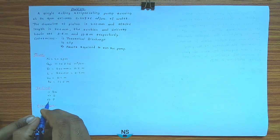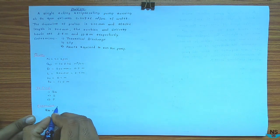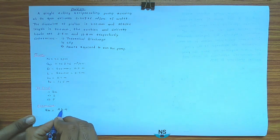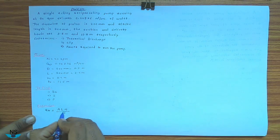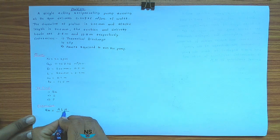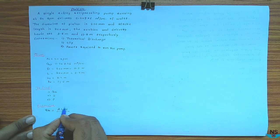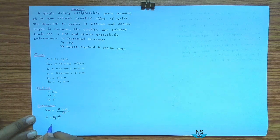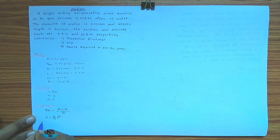For a reciprocating pump, theoretical discharge Q_theoretical is equal to area (A) into stroke length (L) into speed n in rpm, divided by 60. The division by 60 is to convert rpm into rps. Here A is the area of the cylinder, that is A = π/4 × d², L is stroke length, and n is speed in rpm.